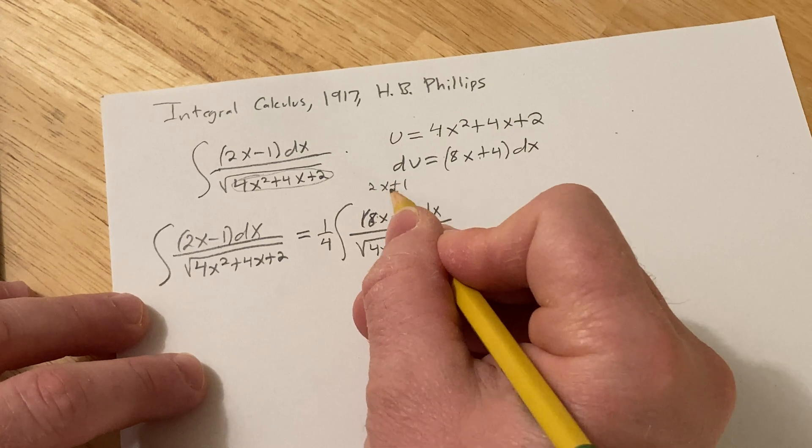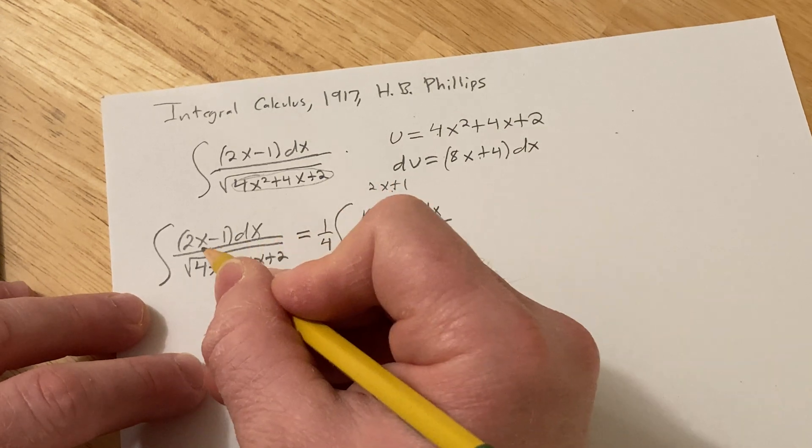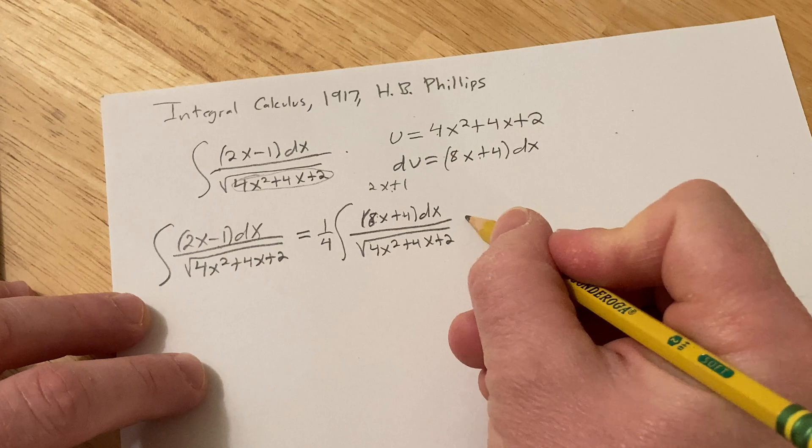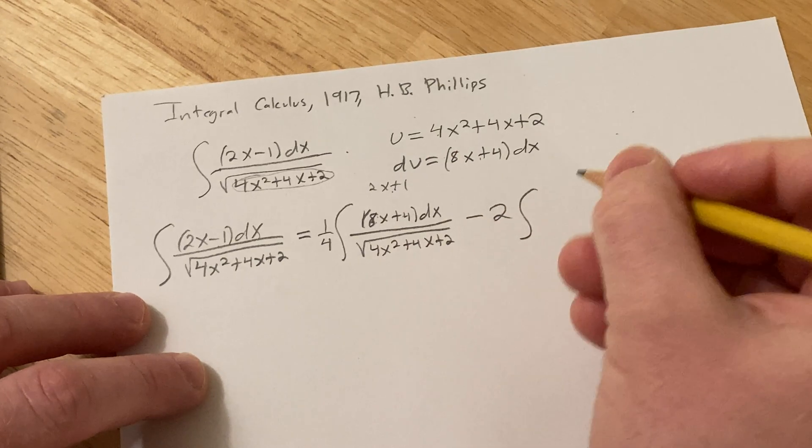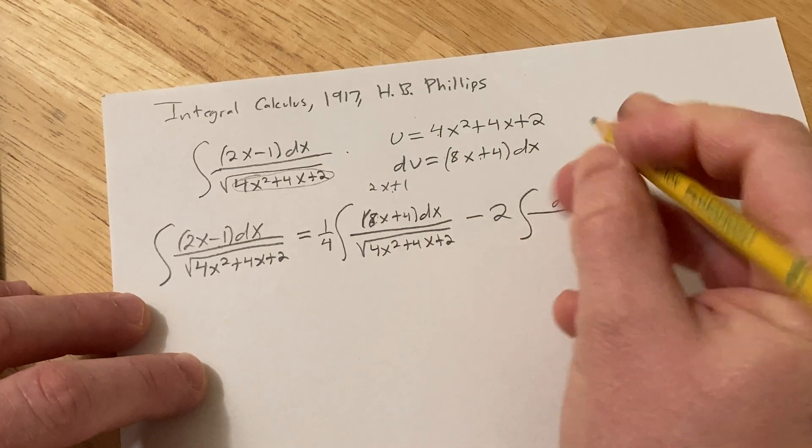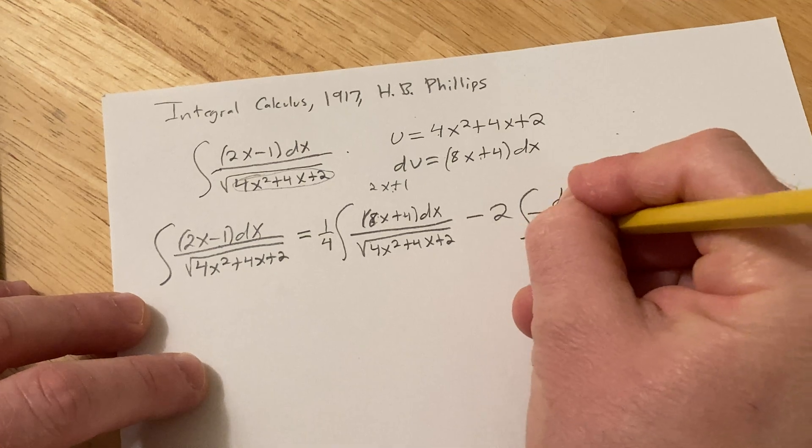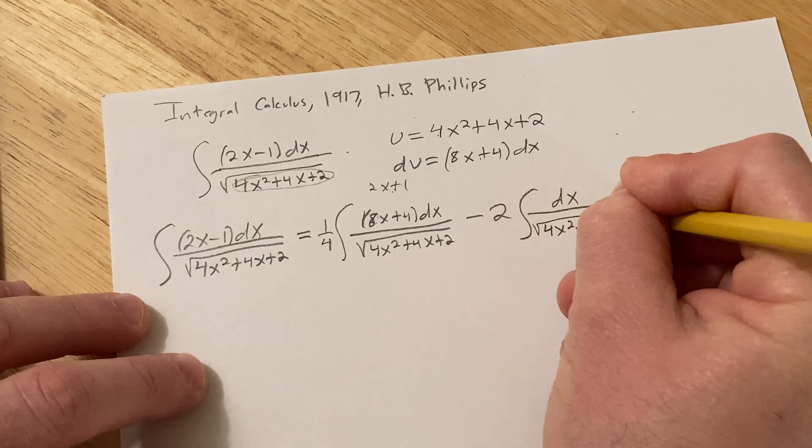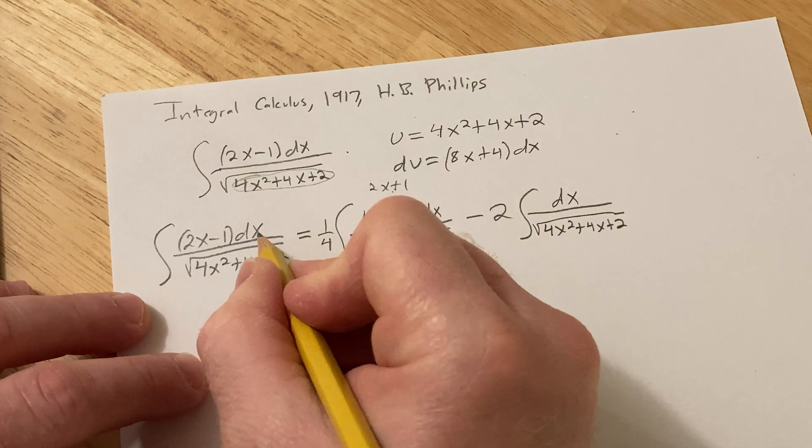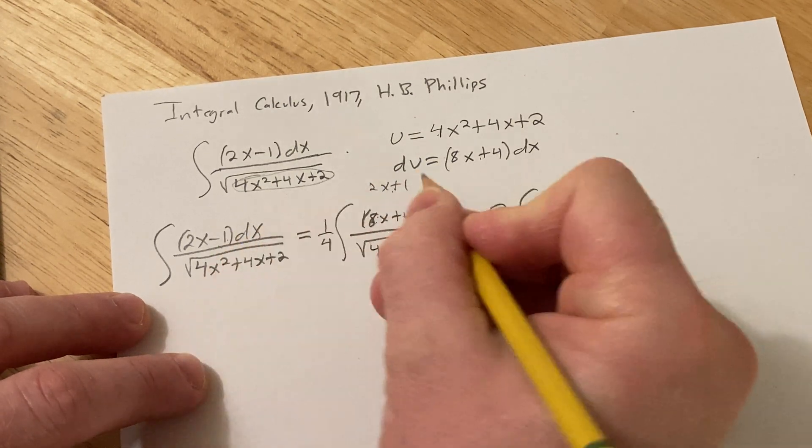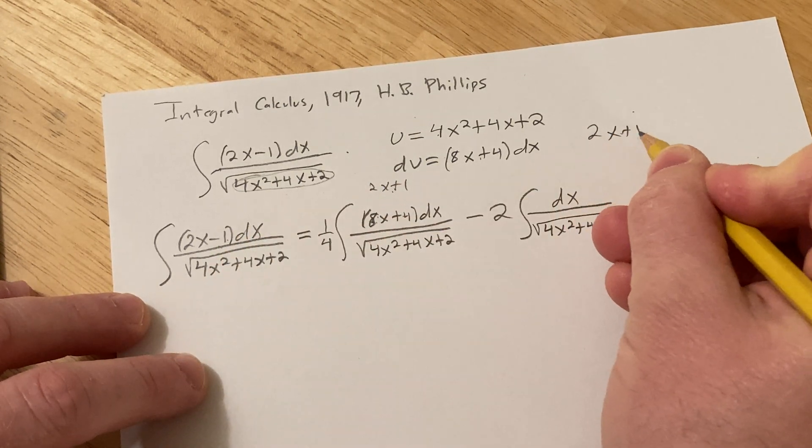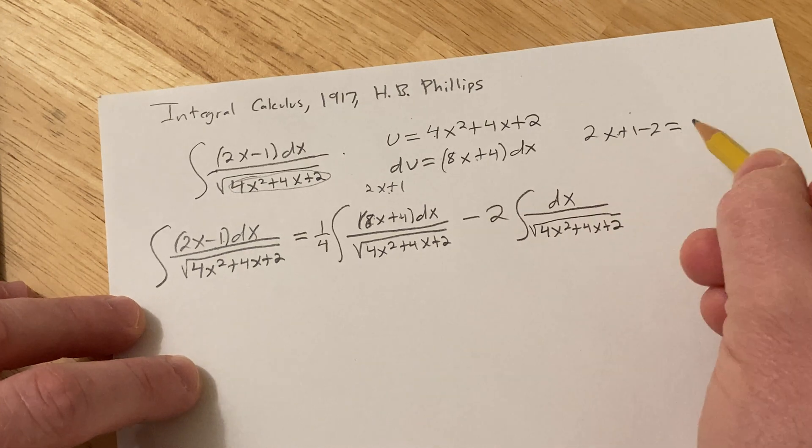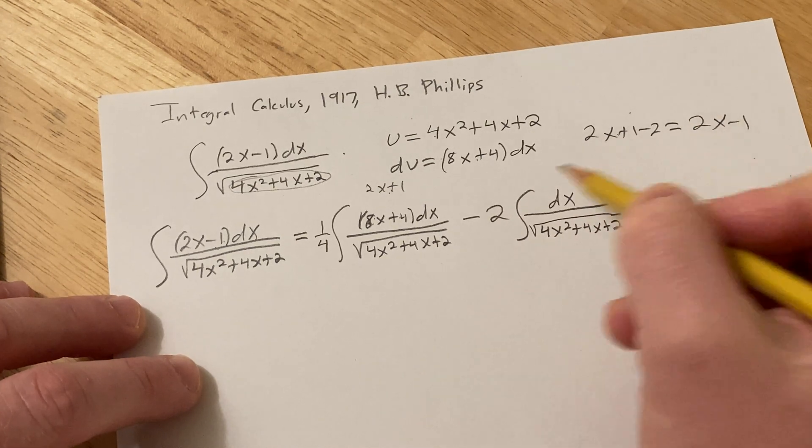How do you get from 2x + 1 to 2x - 1? Well, you subtract 2. So we have dx over the square root of (4x² + 4x + 2). How do you get from 2x + 1 to 2x - 1? You subtract 2, because 2x + 1 - 2 equals 2x - 1. Boom. Magic.